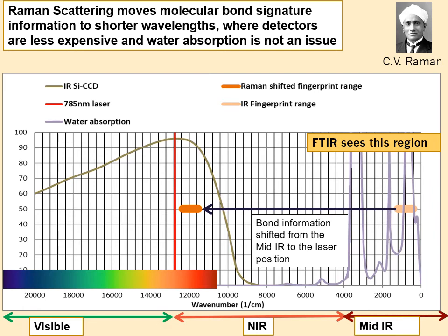If you look at the graph, there's water absorption over on the right, which is a big problem. But over on the left, the vertical red line represents a laser line, and that bond information will follow that line. So you can engineer your Raman shift to whatever wavelength you want depending on the laser and sample you're using.